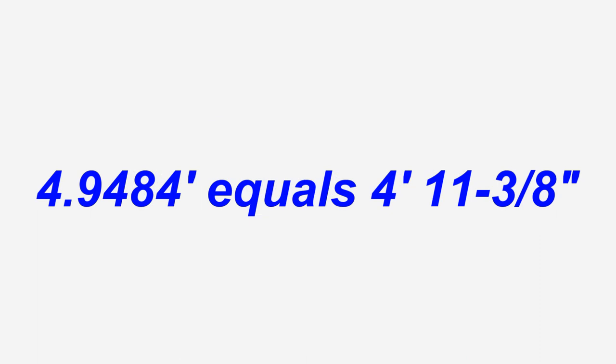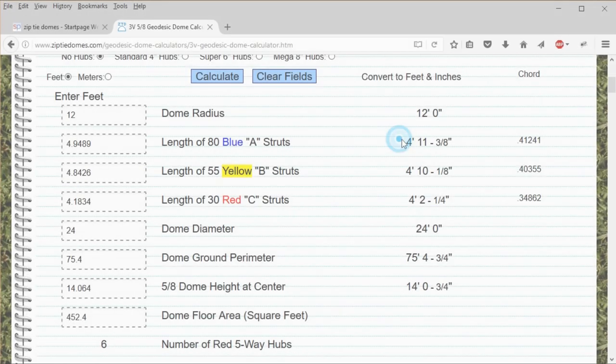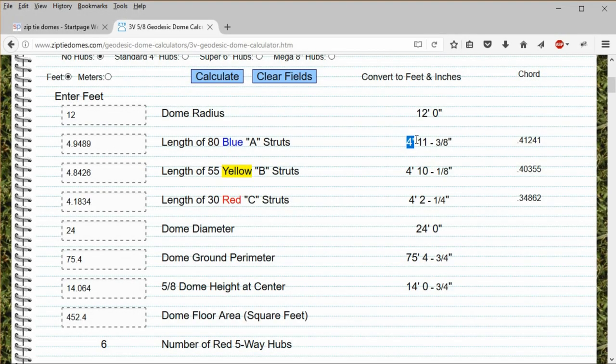So 4.9484 equals 4 feet 11 and 3/8 inches. If the geodesic dome calculator you are using does not have this function, this is how you would calculate inches and fractions by hand.